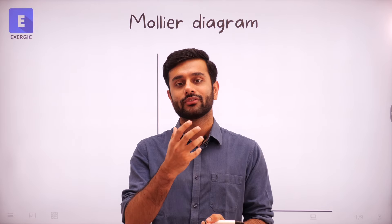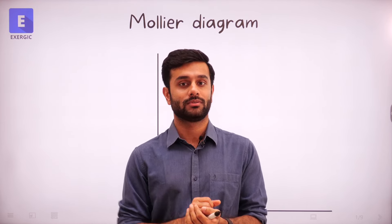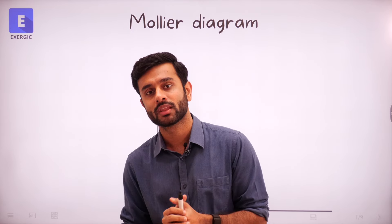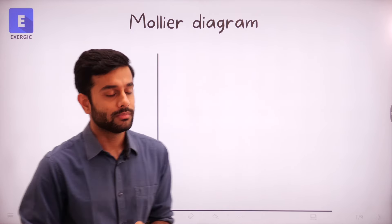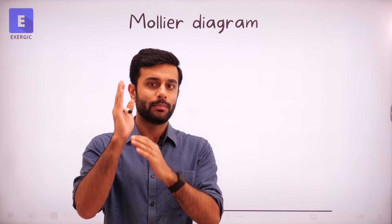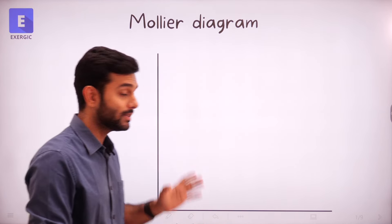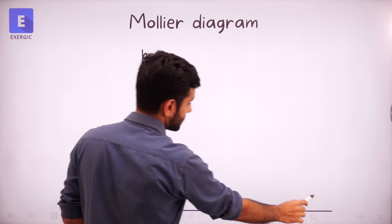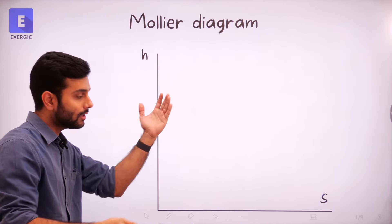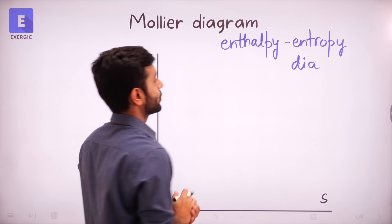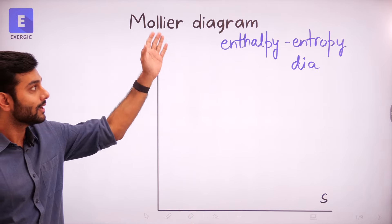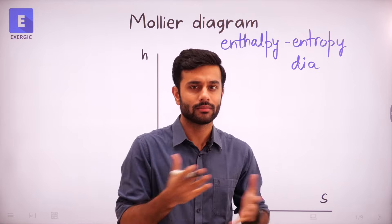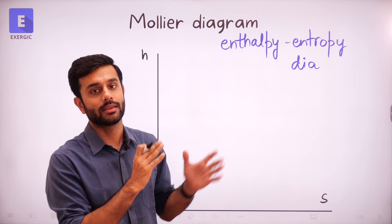So what is the need for one more diagram? How is this diagram different? In this diagram, just like we used to plot PV and TS, we are going to plot HS — enthalpy and entropy. So it is also called the enthalpy-entropy diagram, HS diagram, or Mollier diagram. These are the different names for the same diagram.